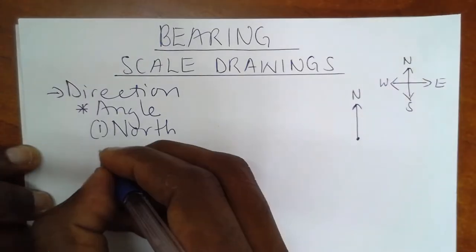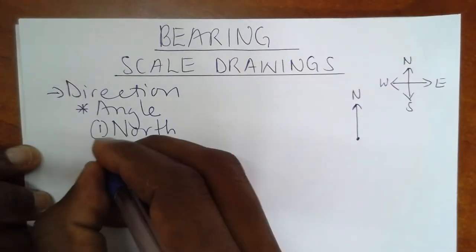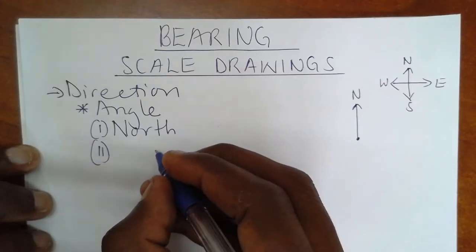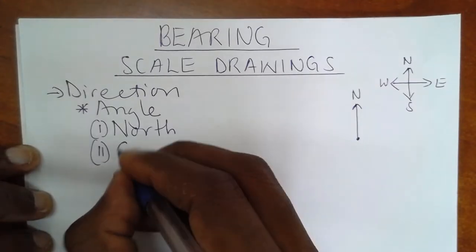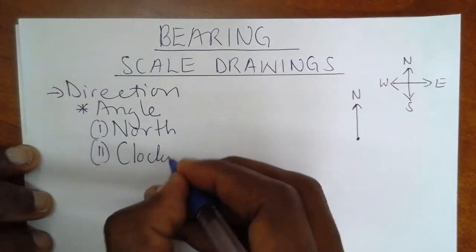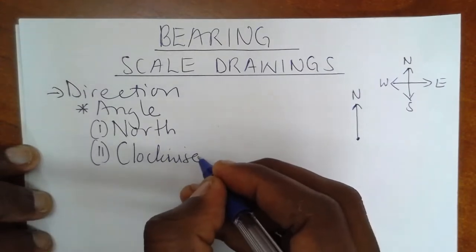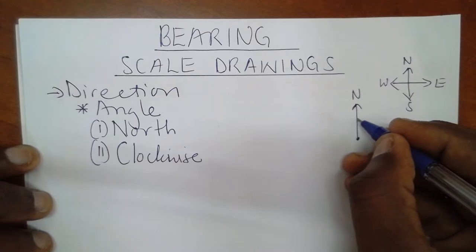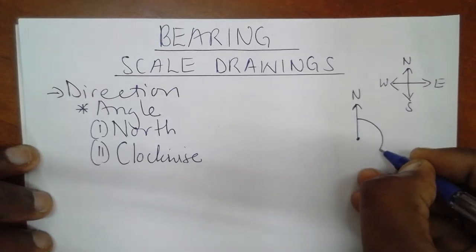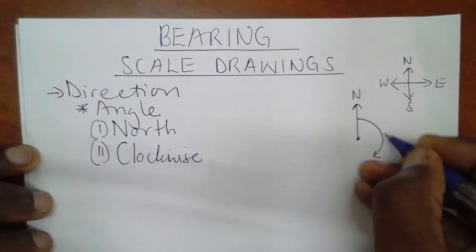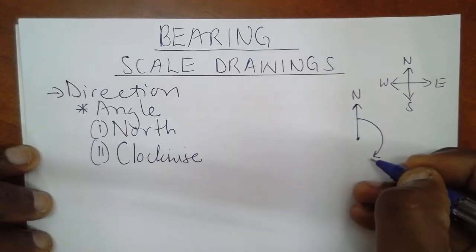Again, this angle, in order to obtain it, we must move following the clockwise direction. Only clockwise. So bearing, in order to measure that specific angle which is wanted, somebody must move clockwise to find the angle.